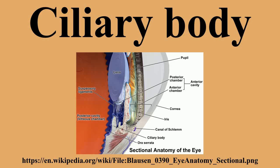The ciliary epithelium of the ciliary processes produces aqueous humor, which is responsible for providing oxygen, nutrients, and metabolic waste removal to the lens and the cornea, which do not have their own blood supply. 80% of aqueous humor production is carried out through active secretion mechanisms, and 20% is produced through the ultra-filtration of plasma. Intraocular pressure affects the rate of ultra-filtration, but not secretion.